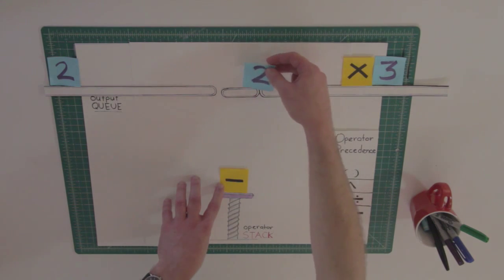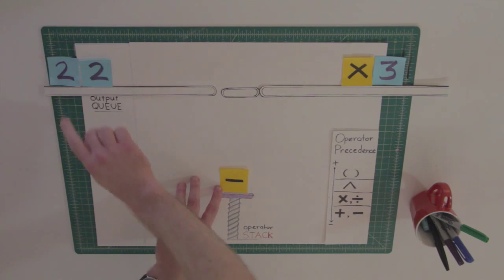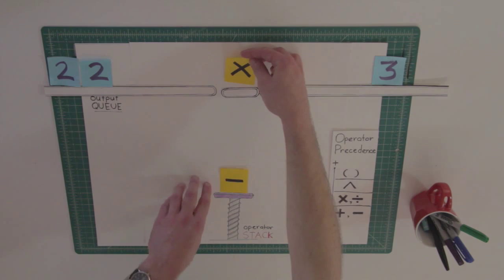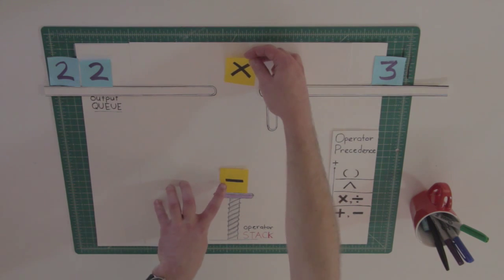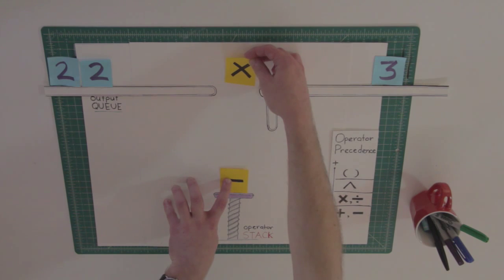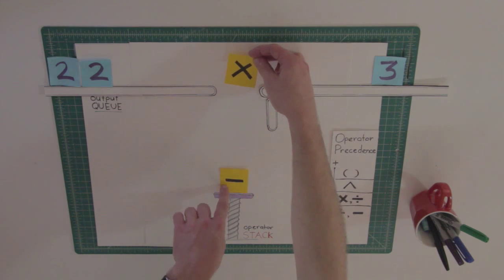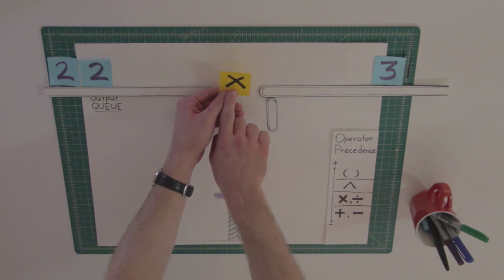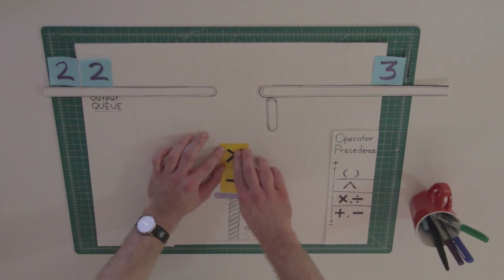We read the next token. Yes, it is a number, so we add it to the output queue, and we read the next token. Again, is it a number? No, it is an operator. So we check — we compare this operator with the operator at the top of the stack. If the operator at the top of the stack has higher or equal precedence than the current operator, we should pop the top operator and add it to the output queue. But since the multiplication symbol has more precedence than the subtraction symbol, we can push it to the operator stack.